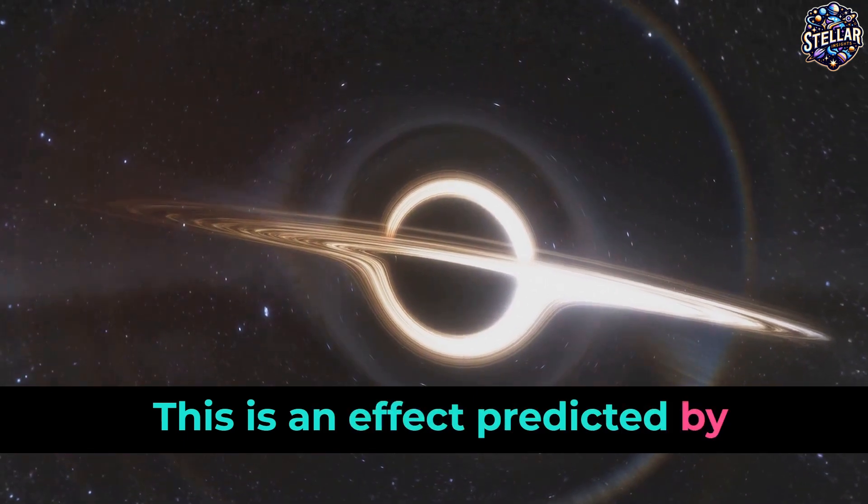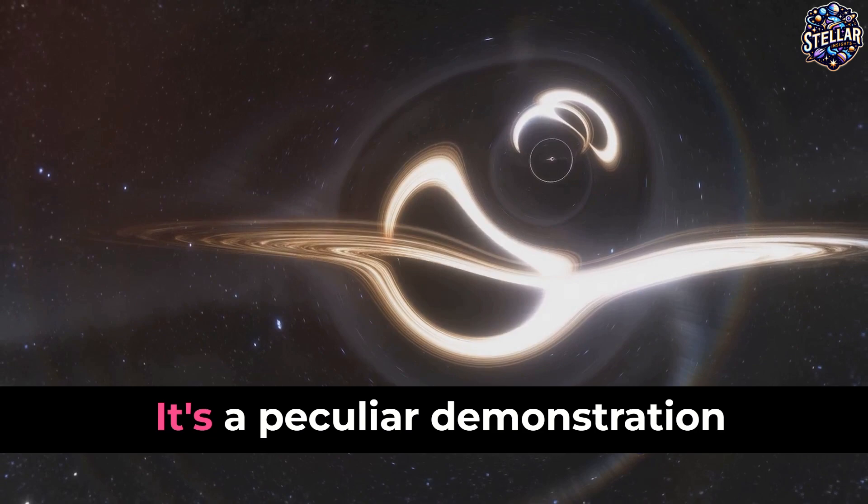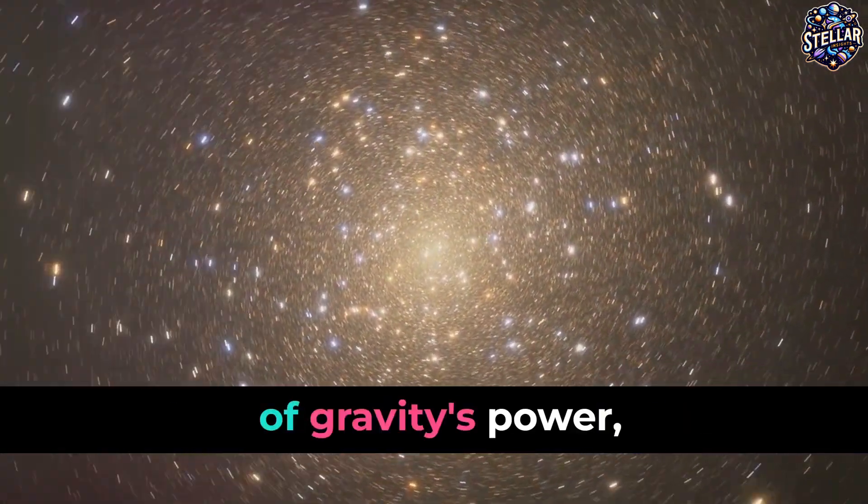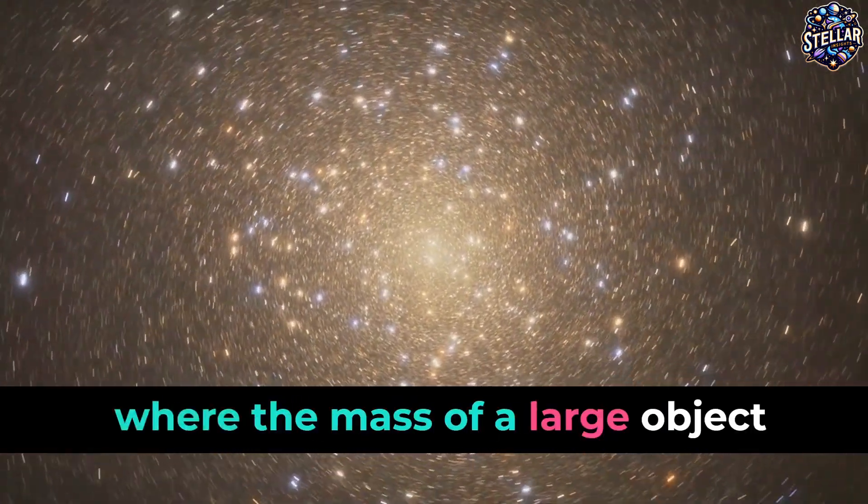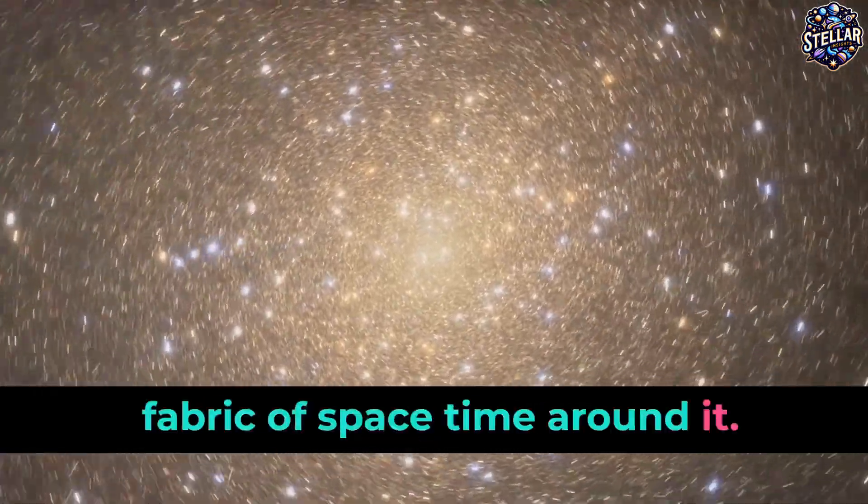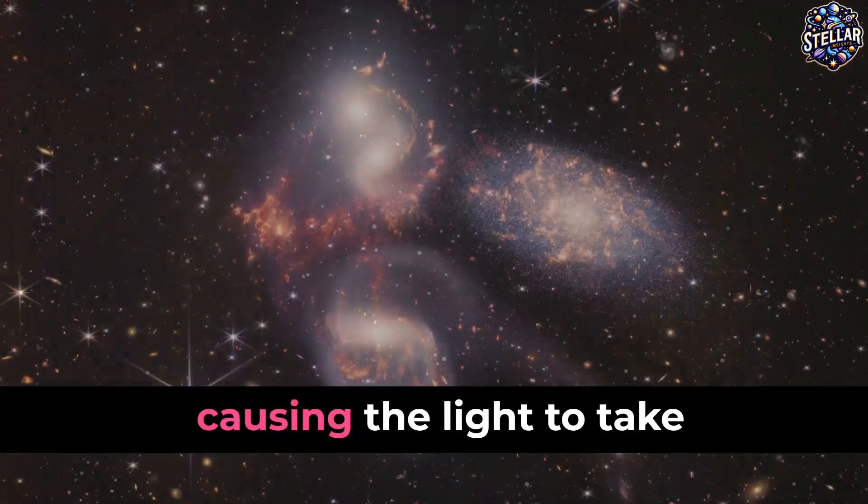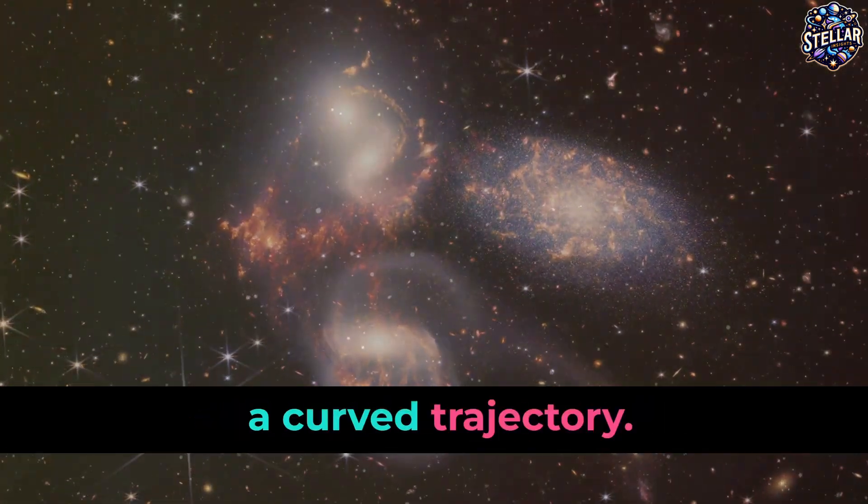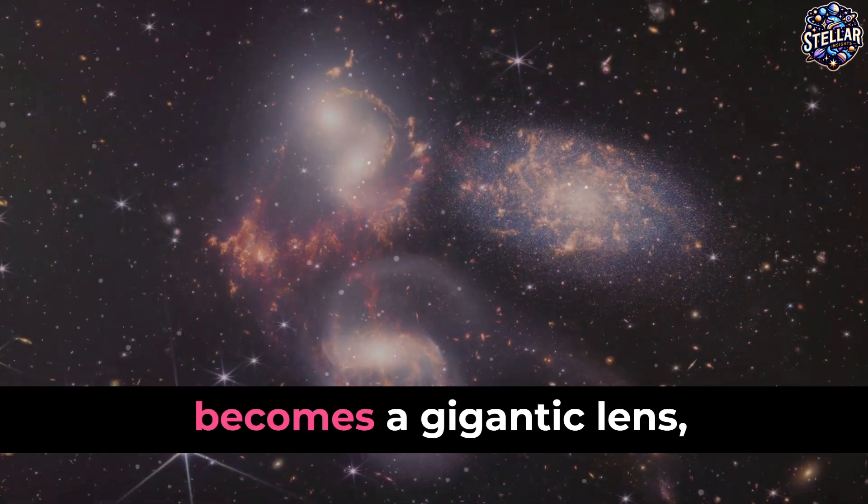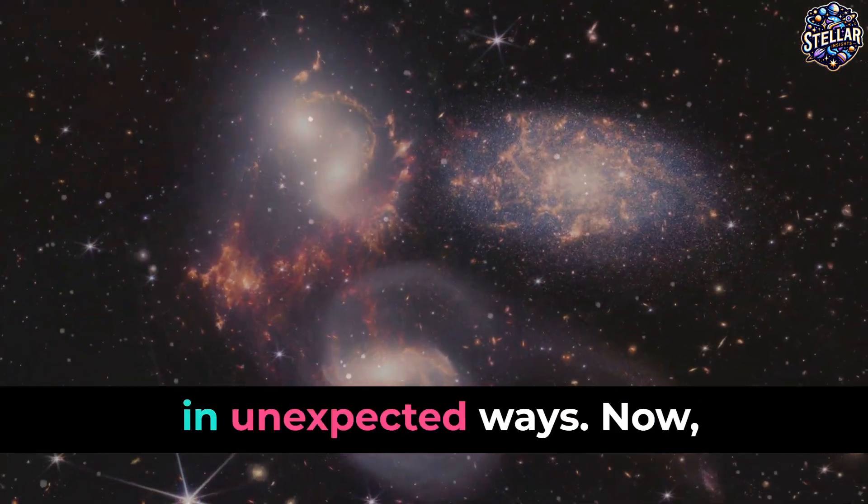Let's delve into this fascinating phenomenon known as gravitational lensing. This is an effect predicted by Albert Einstein in his general theory of relativity. It's a peculiar demonstration of gravity's power, where the mass of a large object, like a galaxy, distorts the fabric of space-time around it. This distortion bends the path of light traveling near it, causing the light to take a curved trajectory. It's as if the universe itself becomes a gigantic lens, bending and focusing light in unexpected ways.